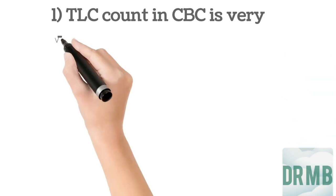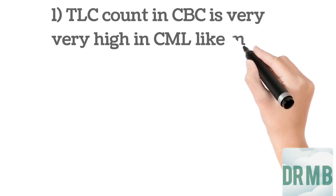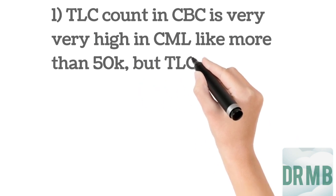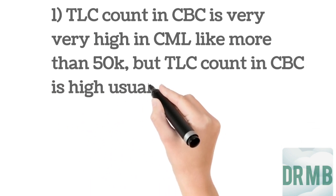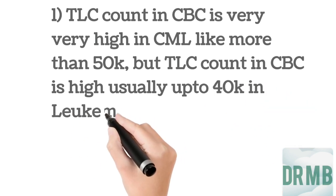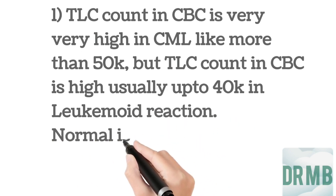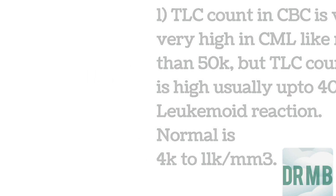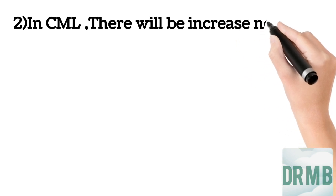Look into the total leukocyte count in the complete blood count test. It is very high in chronic myeloid leukemia — more than 50,000 — but in leukemoid reaction, total leukocyte count is usually up to 40,000. The normal value of total leukocyte count is 4,000 to 11,000 per cubic millimeter.